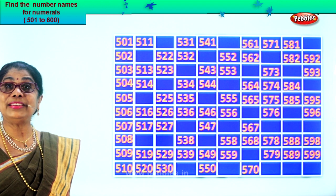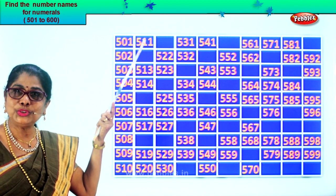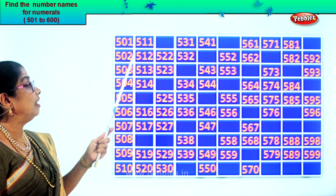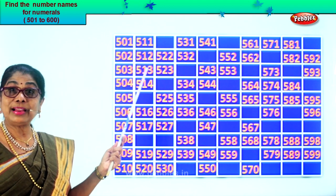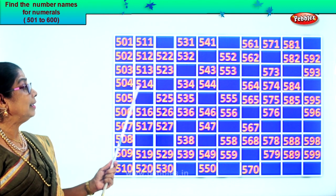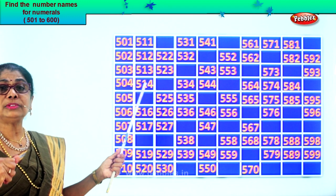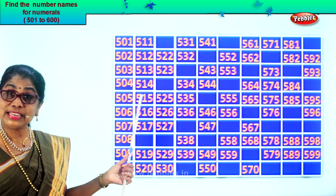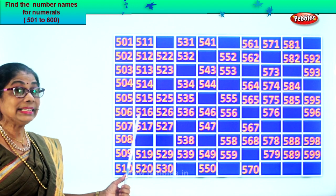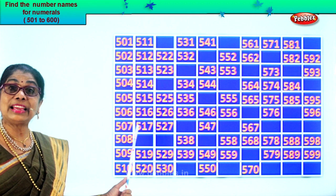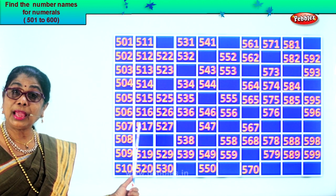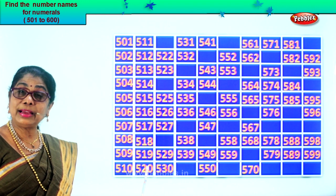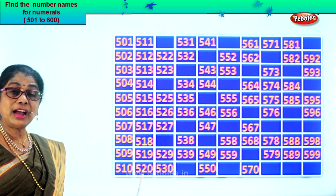After ten comes eleven, so five hundred and eleven. Are you enjoying it? Good. After eleven comes twelve — five hundred and twelve. Five hundred and thirteen. Five hundred and fourteen. After fourteen comes fifteen — five hundred and fifteen. Five hundred and sixteen. Five hundred and seventeen. After seventeen comes eighteen — five hundred and eighteen. Five hundred and nineteen. Five hundred and twenty.